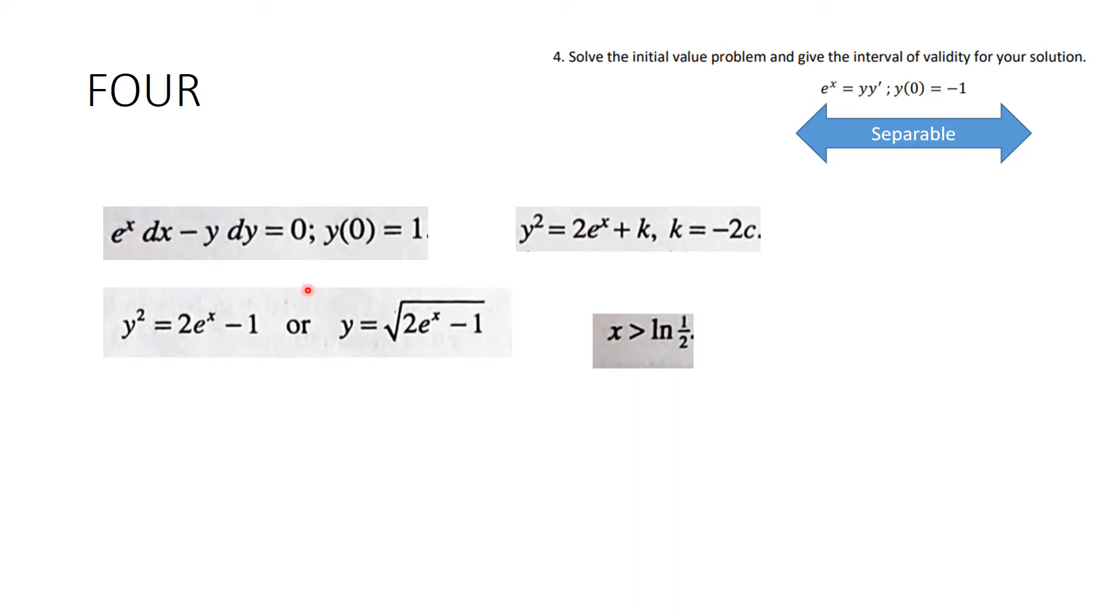From the initial condition you can tell that it's going to be the plus square root, and then here the domain has to be such that this is greater than or equal to 0. So the x is greater than or equal to the natural logarithm of 1 half. So you go from natural logarithm of 1 half all the way to plus infinity.